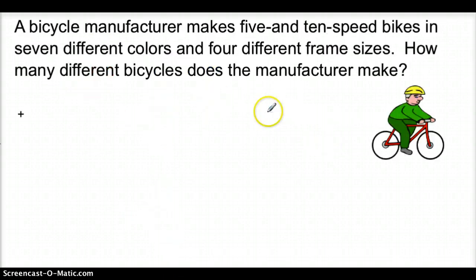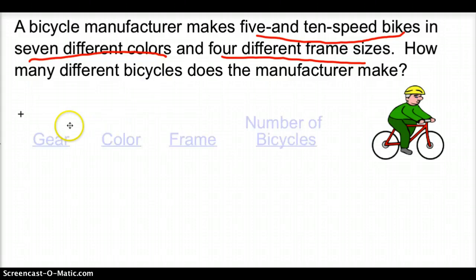Let's try an example here. A bicycle manufacturer makes five and ten speed bikes in seven different colors and four different frame sizes. How many different bicycles does a manufacturer make? We have to figure out how many possible outcomes that we can have, and we have to figure out what those outcomes are in. If we take a look at our word problem, we have the different kind of speed bikes he can make, the different colors he can have, and then the four different frame sizes. So, let's go ahead and get started with this.